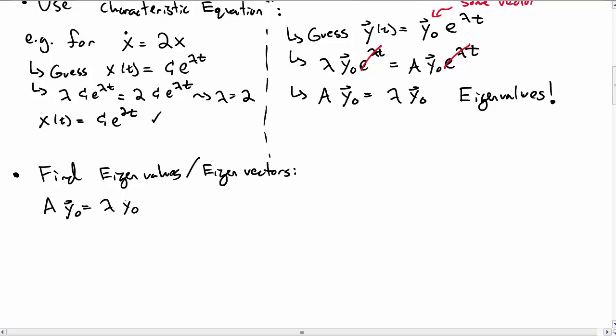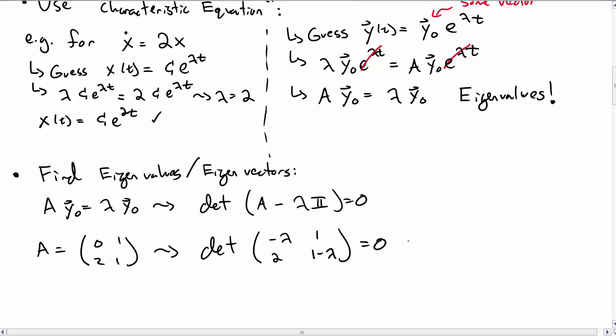So recall, we have an eigenvalue equation. We can rewrite that as the determinant of A minus lambda times the identity equals 0. So here we have A as 0, 1, 2, 1. So we're taking the determinant of minus lambda, 1, 2, and 1 minus lambda. And that must be equal to 0.